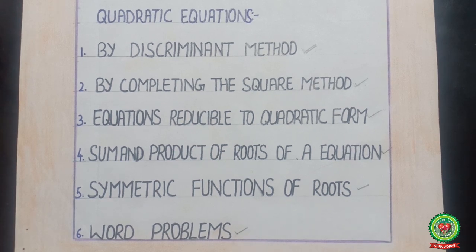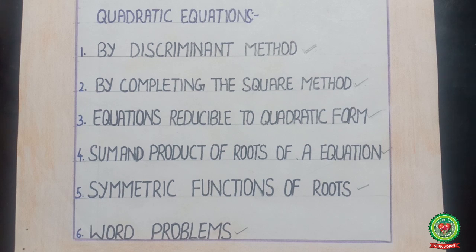In word problems, we are going to discuss how to read a statement and from that statement how to make a quadratic equation, then find the value of the missing variable by using discriminant method, by completing the square method, or by using factorization method.